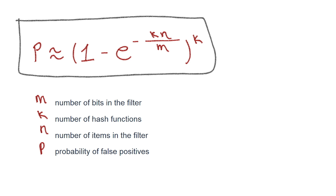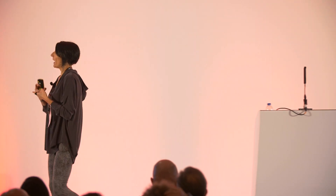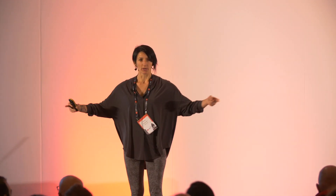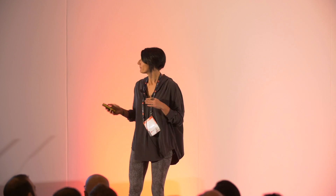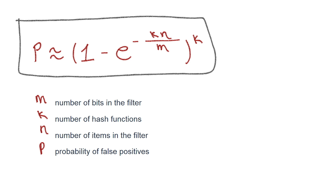What is that error rate? What can we expect? A Bloom filter has four main characteristics: M is the number of bits in the filter — the length of our bit array; K is the number of hash functions we are going to use; N is the number of items in the filter; and P is the calculated probability of false positives. There is a formula you can use — if you know three of the variables, you can calculate the fourth. You can play around with them: knowing one, you can derive another.